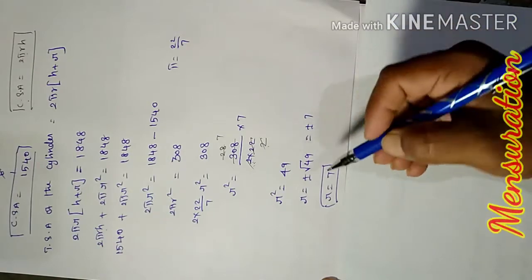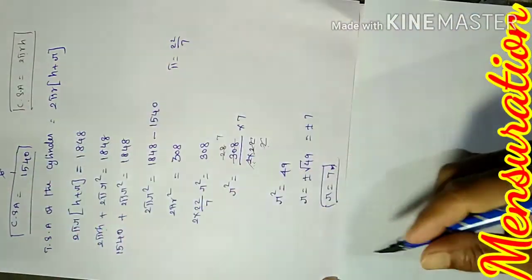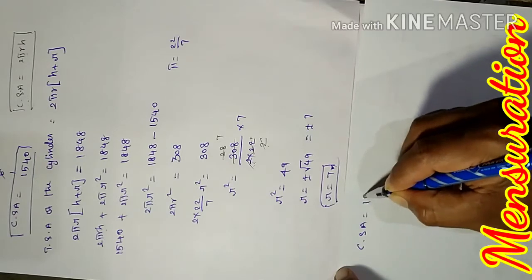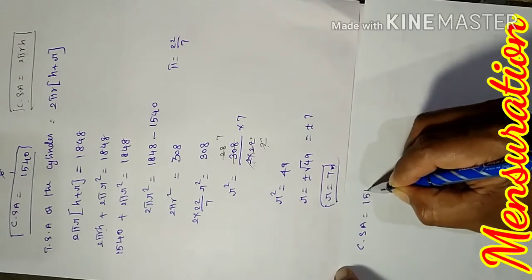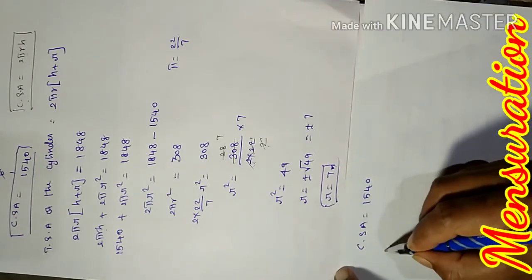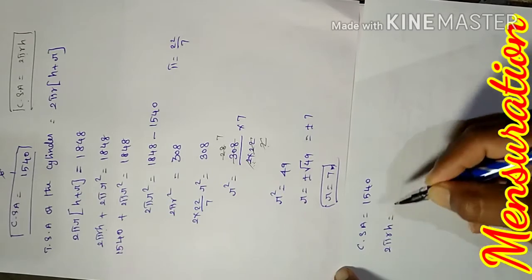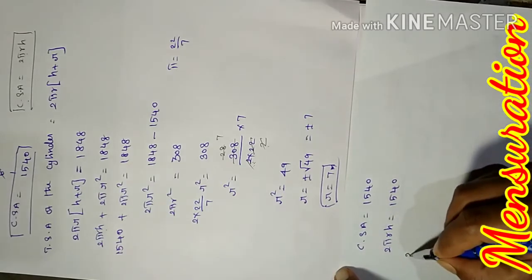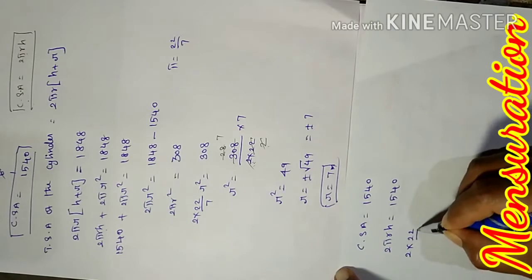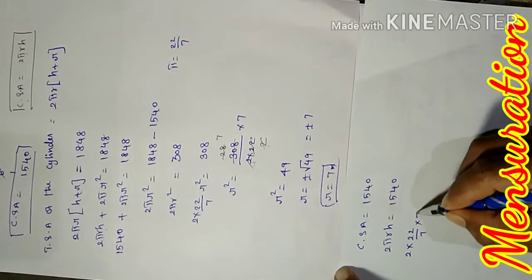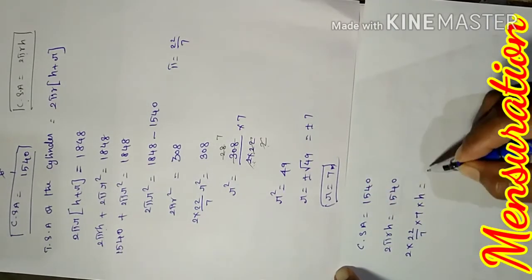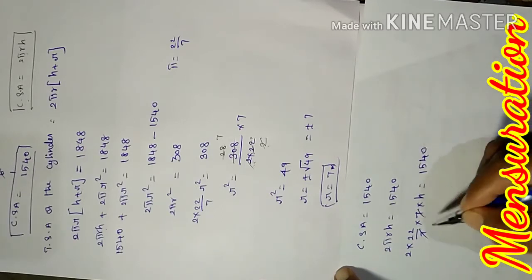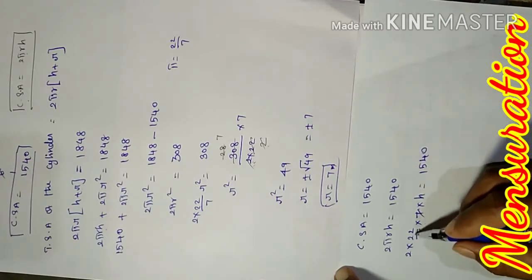Next, finding the height. We use the curved surface area formula: CSA = 2πrh = 1540. Substituting the values: 2 × (22/7) × 7 × h = 1540. Solving for h.